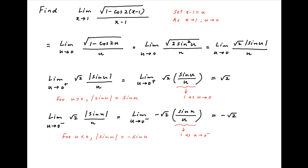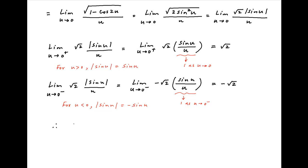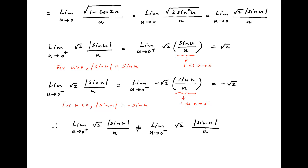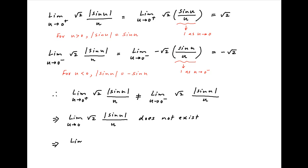the value of this limit is equal to minus root 2. Therefore the limit of root 2 times mod sine u upon u as u tends to 0 from the positive side is not equal to the limit as u tends to 0 from the negative side. It therefore follows that the limit of root 2 times mod sine u upon u as u tends to 0 does not exist, which implies that the given limit of square root of 1 minus cos of 2(x minus 1) upon x minus 1 as x tends to 1 also does not exist, which is the required answer.